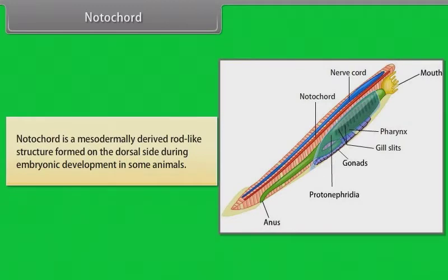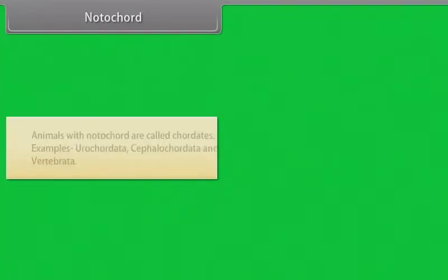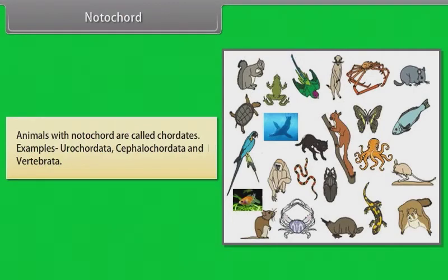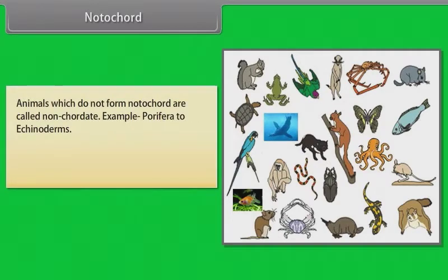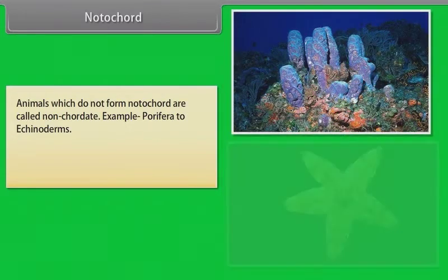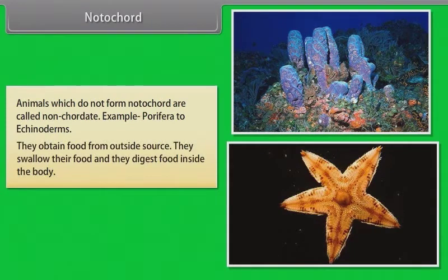Notochord is a mesodermally derived rod-like structure formed on the dorsal side during embryonic development in some animals. Animals with notochord are called chordates. Example: Urochordata, Cephalochordata and Vertebrata. Animals which do not form a notochord are called non-chordates. Example: Porifera to Echinoderms. They obtain food from outside sources, swallow their food, and digest food inside the body.